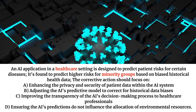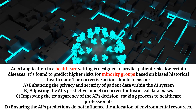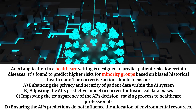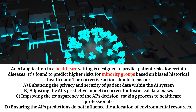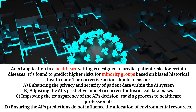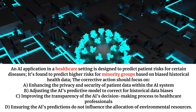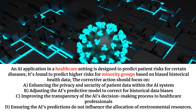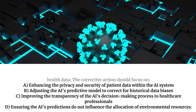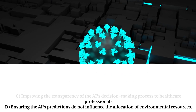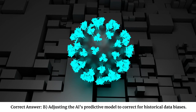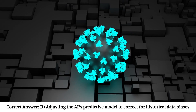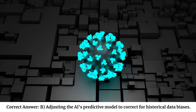The corrective action should focus on: A. Enhancing the privacy and security of patient data within the AI system. B. Adjusting the AI's predictive model to correct for historical data biases. C. Improving the transparency of the AI's decision-making process to healthcare professionals. D. Ensuring the AI's predictions do not influence the allocation of environmental resources. Correct answer: B — Adjusting the AI's predictive model to correct for historical data biases.